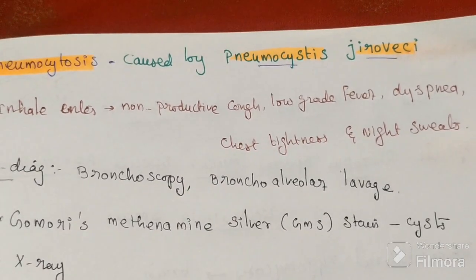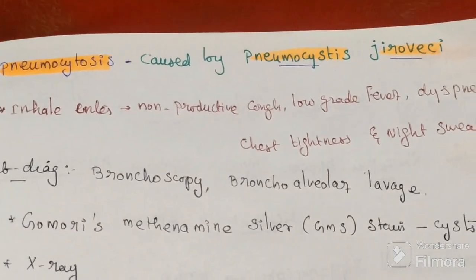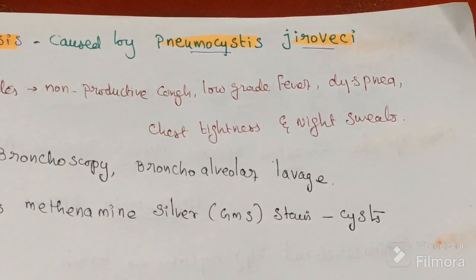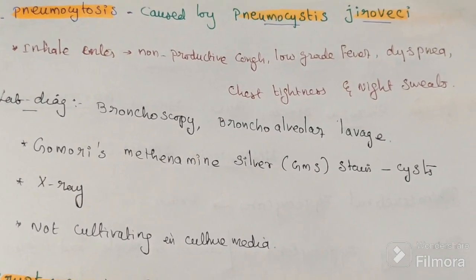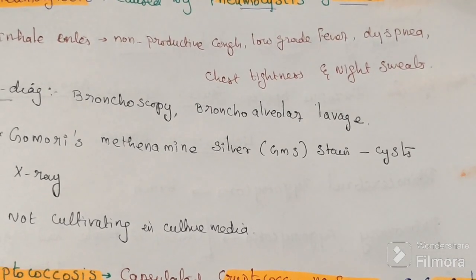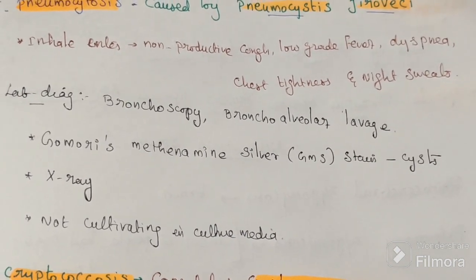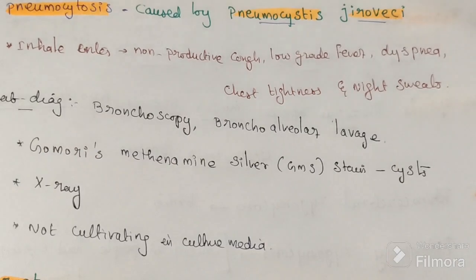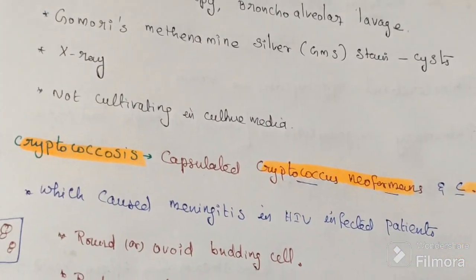The fourth fungus causes pneumocystosis, caused by Pneumocystis jirovecii. Entry is through inhalation, producing non-productive cough, low-grade fever, chest tightness, and night sweats. For laboratory diagnosis, bronchoscopy is used along with Gomori methenamine silver staining for identification of cysts, and X-ray. Notably, Pneumocystis cannot be cultivated using standard culture media.